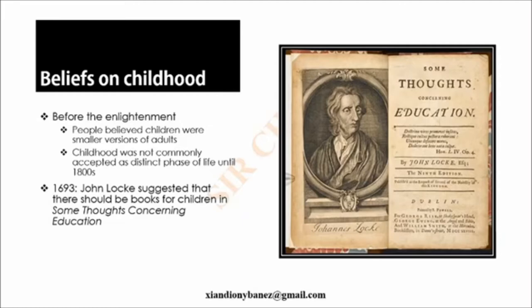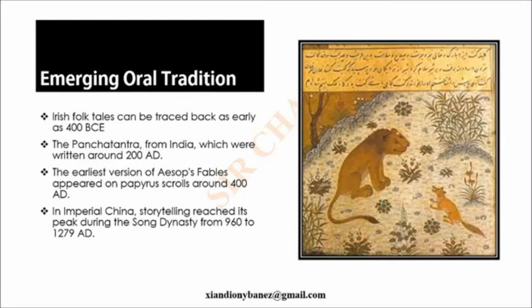Let's take a look at a brief history of children's literature from its emerging oral tradition. Just as other forms of literature, children's literature grew from stories passed down orally from generation to generation. Irish folk tales can be traced back as early as 400 BCE, while the earliest written folk tales are arguably the Panchatantra from India, written around 200 AD. The earliest version of Aesop's Fables appeared on papyrus scrolls around 400 AD. In imperial China, storytelling reached its peak during the Song Dynasty from 960 to 1279 AD.